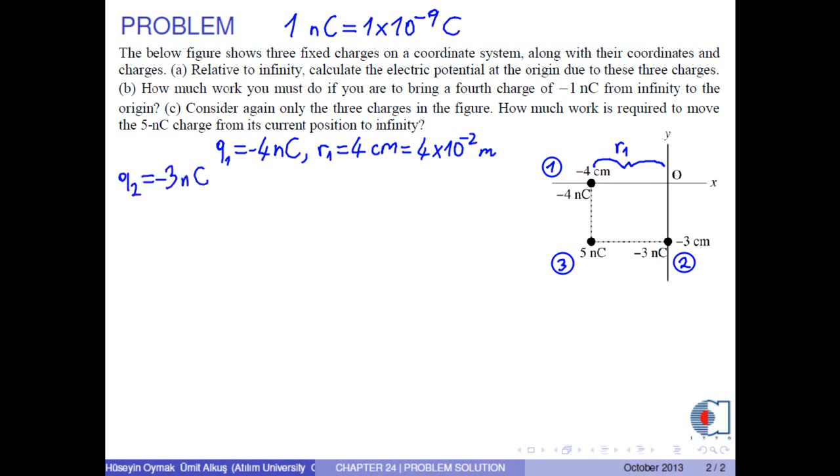Q2 is negative 3 nanocoulombs, and the distance between Q2 and the origin is R2, which is 3 cm. Finally, Q3 is 5 nanocoulombs, and the distance between Q3 and the origin can be found by the Pythagorean theorem as 5 cm.